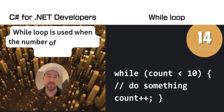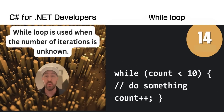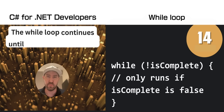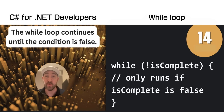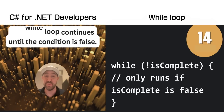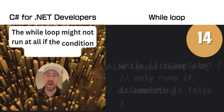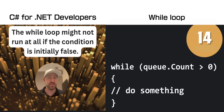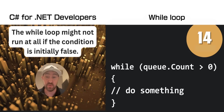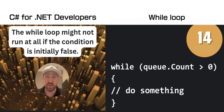The while loop is another control flow statement, but you use it when the number of iterations is unknown. The while loop just keeps going until the condition at the beginning is false. However, if the condition at the beginning is false, it won't run at all, so be careful.